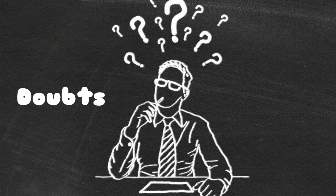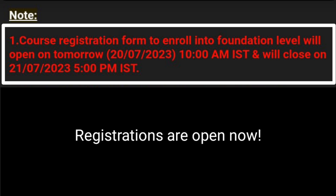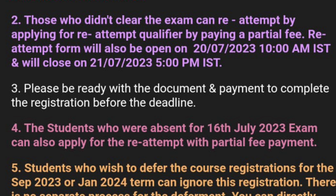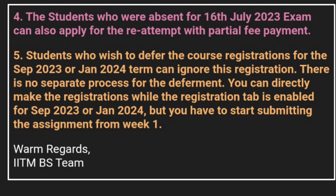Now let's address the most common doubts faced by students. The course registration form to enroll into the foundation level is currently live and will close on 21st July at 5 pm. Those who didn't clear their exam can reattempt by applying for a reattempt qualifier by paying a partial fee of 1,500. The reattempt form will also be open from 20th to 21st July at 5 pm. Students who were absent for the 16th July qualifier can also apply for the reattempt with partial payment.